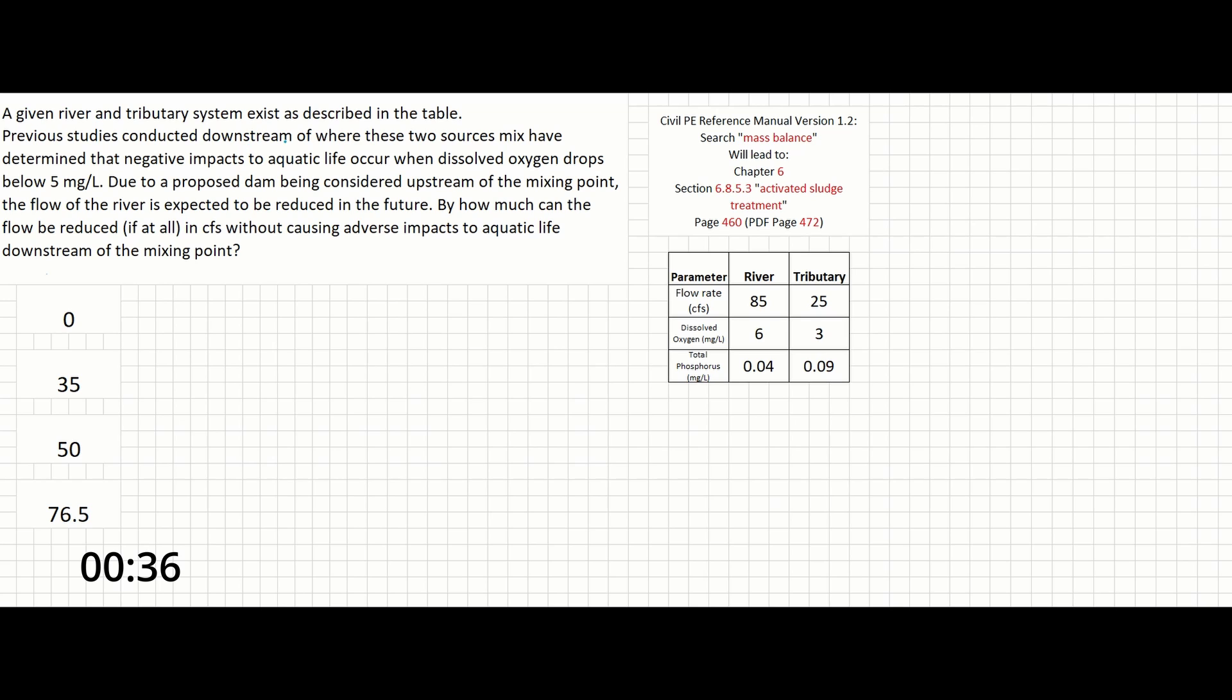We have a given river and tributary system existing as described in this table here. The way the problem is describing it is we have the river here and a tributary here, and the downstream mixing point would be somewhere around here after those two sources come together.